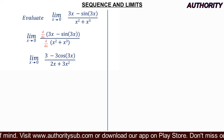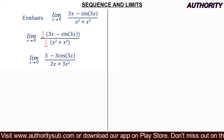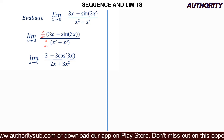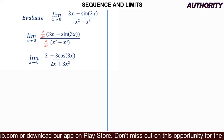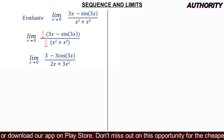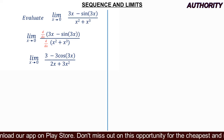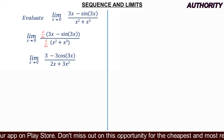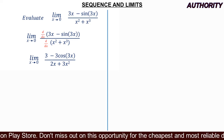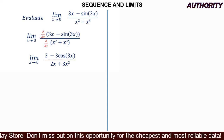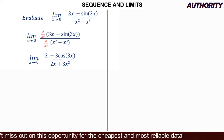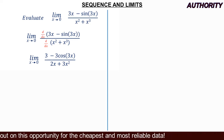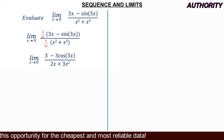Now let's plug in x = 0. In the numerator: cos(3×0) = cos 0 = 1, so we get 3 minus 3(1) = 0. In the denominator: 2(0) + 3(0²) = 0. So we still get 0 over 0, which is still undefined — we need to apply L'Hôpital's Rule again.